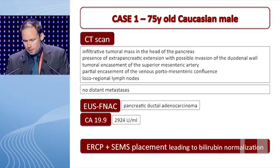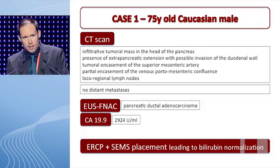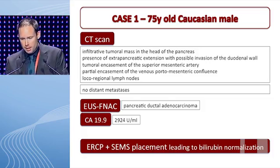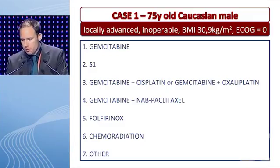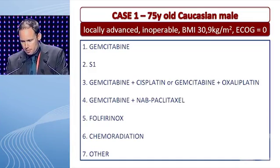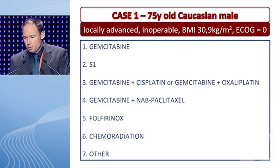However, there are no distant metastases. This patient underwent an endoscopic ultrasound with fine needle aspiration confirming pancreatic ductal adenocarcinoma. The patient's CA 19.9 after resolution of jaundice is at 2,924 units per milliliter. The patient underwent an ERCP with placement of a self-expandable metal stent leading to resolution of clinical jaundice and normalization of bilirubin. At this point, what would be your treatment choice for this 75-year-old patient with locally advanced probably inoperable adenocarcinoma, taking into regard that this patient has an excellent performance status?